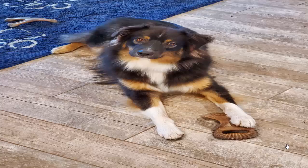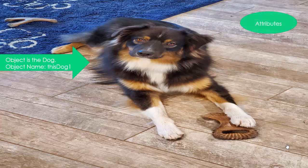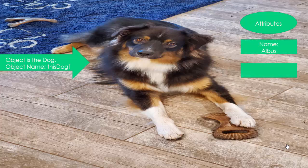So let's take a look at some examples. Here we have an object. The object is the dog itself. It needs a name. So we're calling this dog right here, this dog one. What are some attributes or characteristics of this dog? Well, he has a name and his name is Albus.